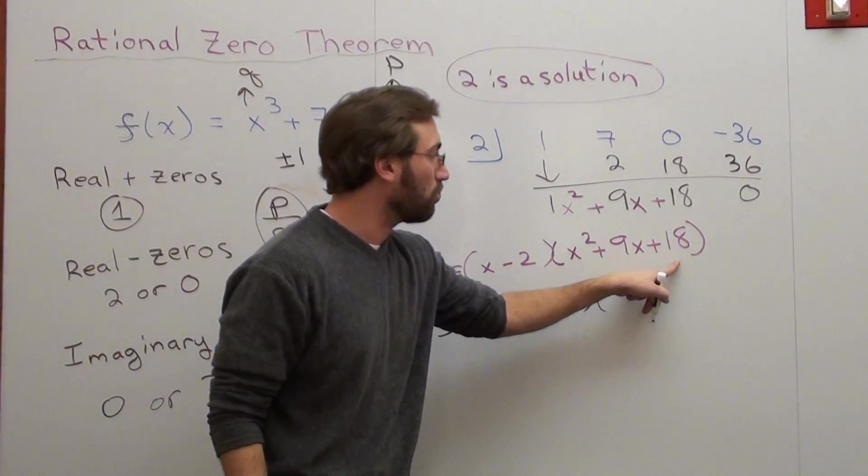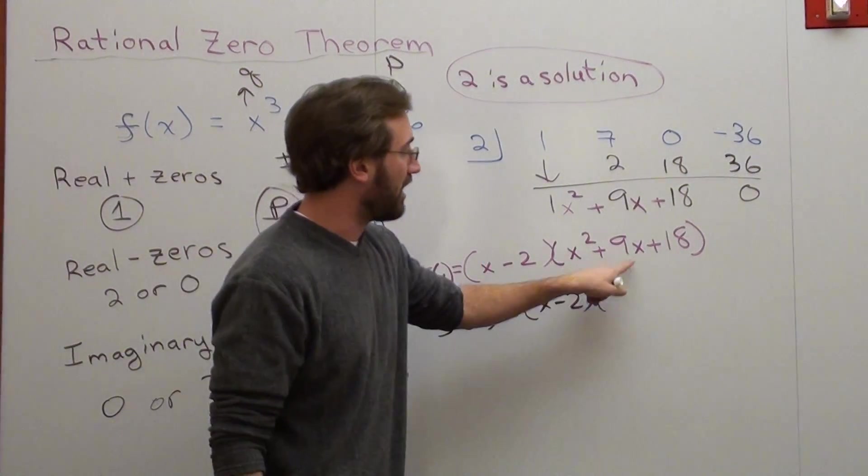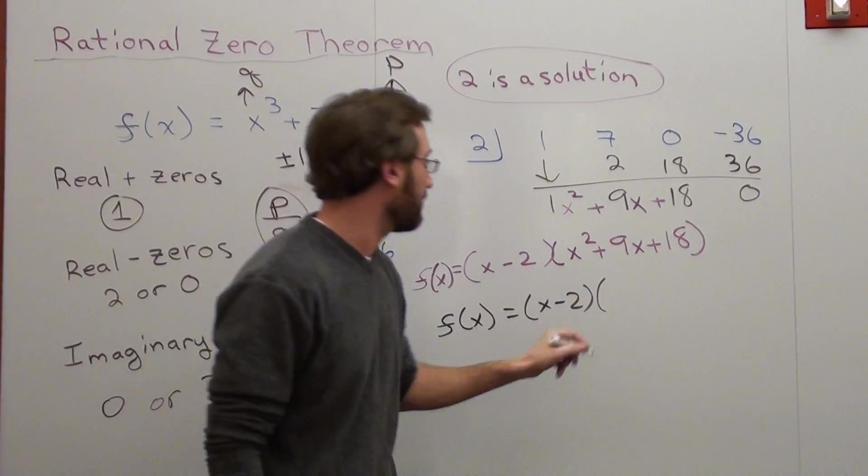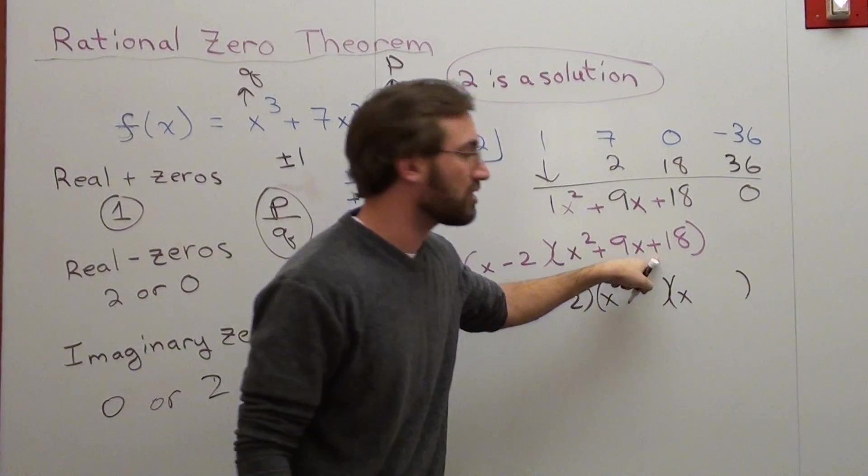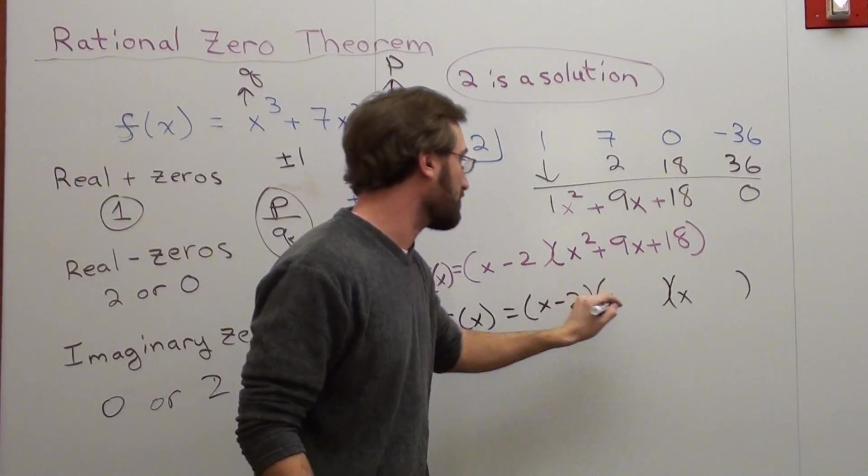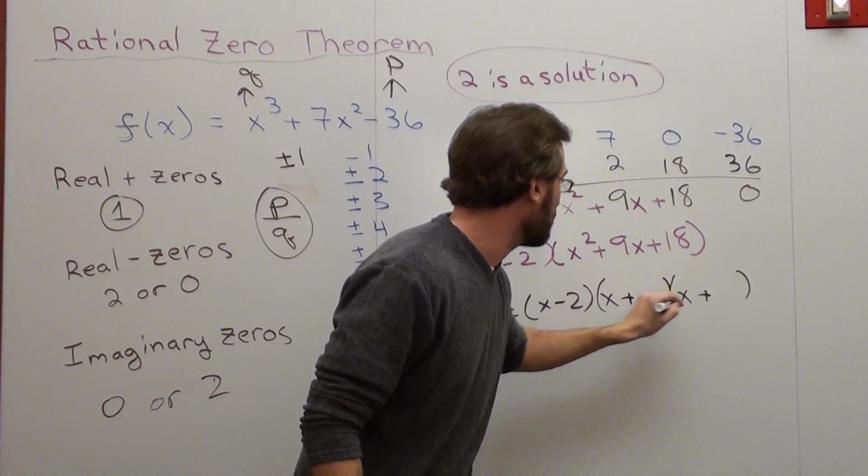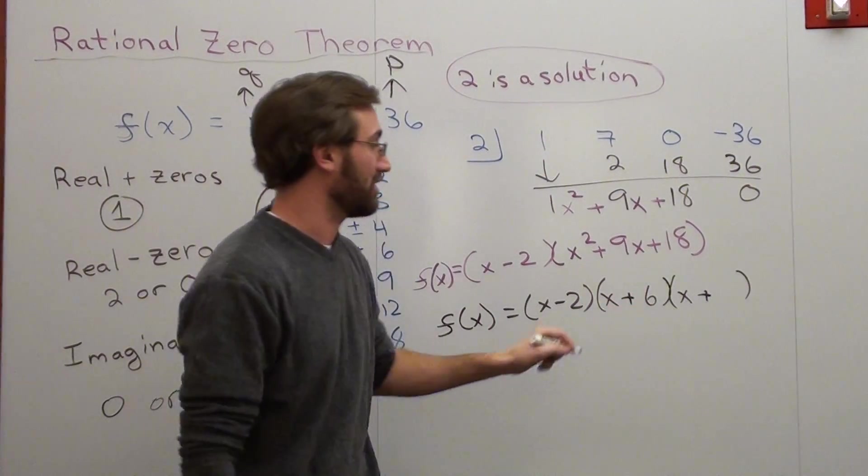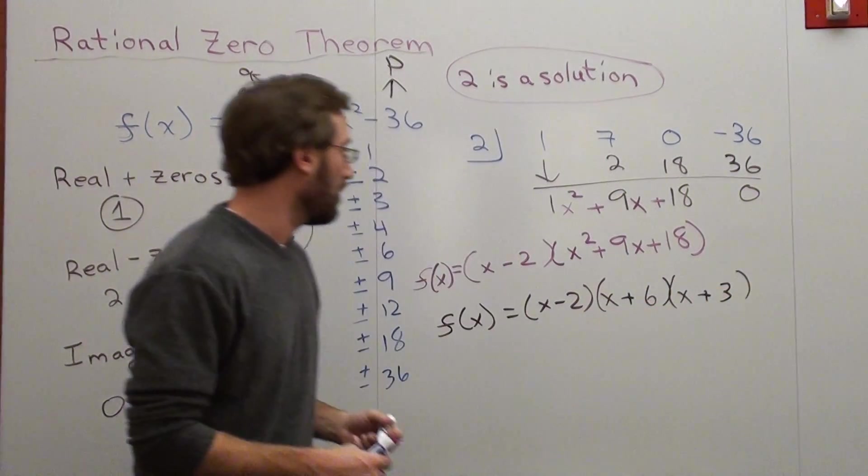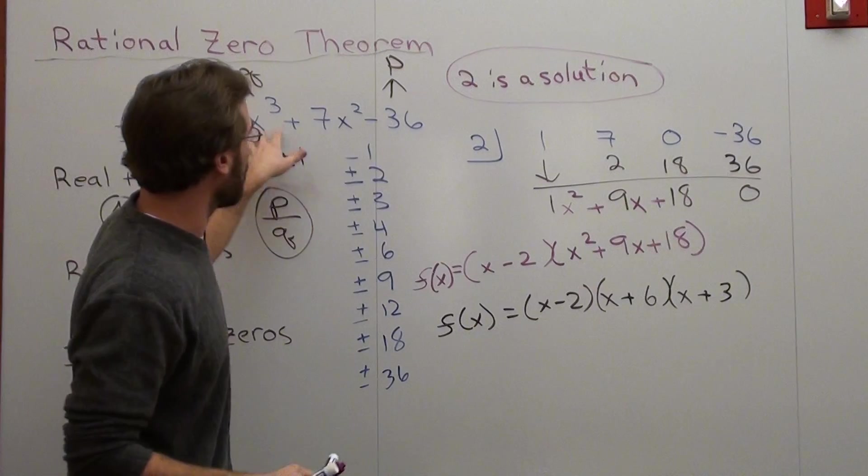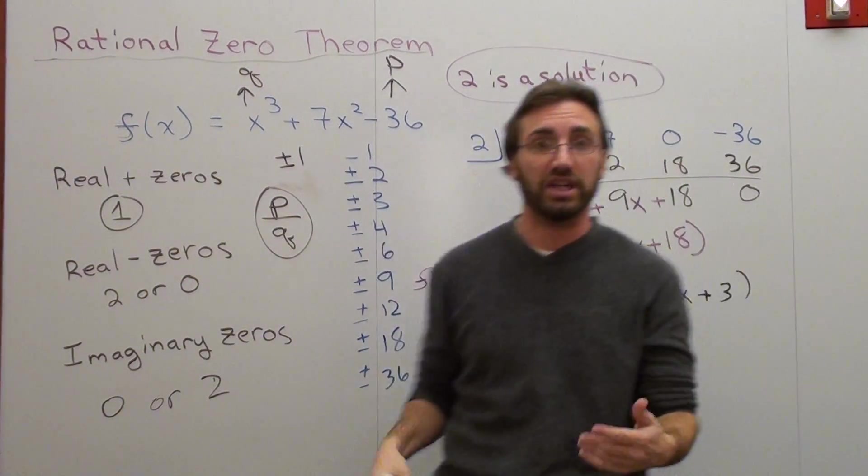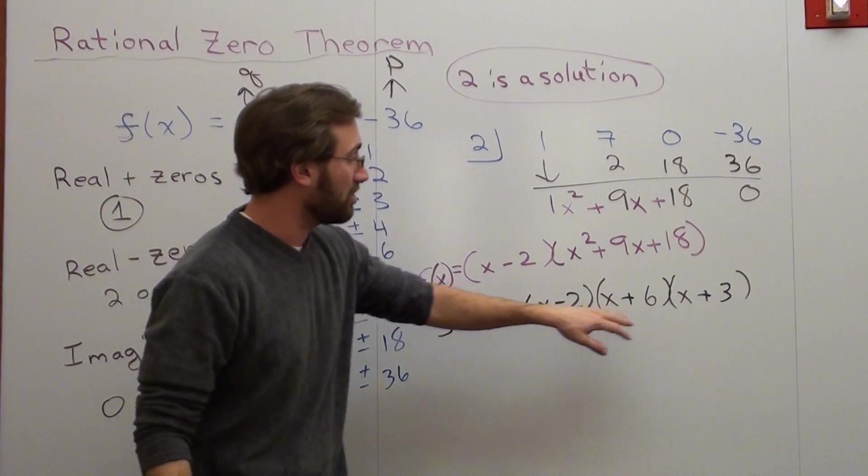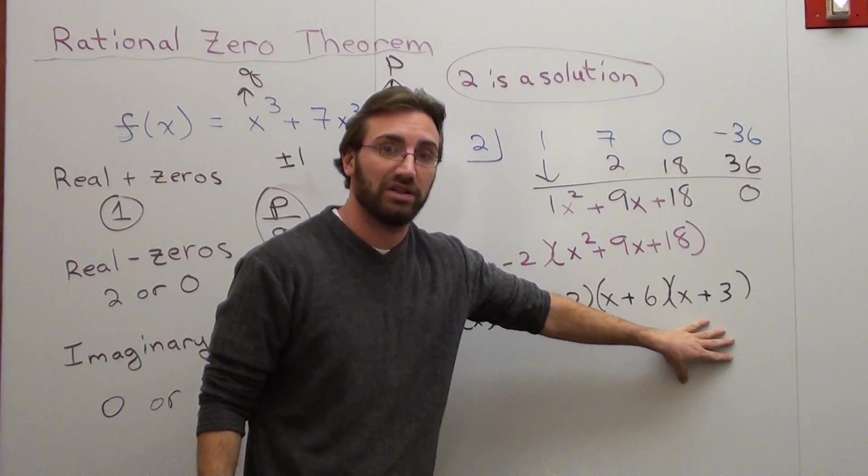So this is actually this, and you can check. You can go ahead and FOIL it in if you want to. And this turns out to be f of x equals x minus 2 times, we can actually factor x squared plus 9x plus 18. What times what will be 18 but we'll add up to be 9? 6 and 3. And since this term is positive and the middle term is positive, it means that they're both positive. Probably should have said that at first, actually. So I successfully rewrote this function right here. x cubed plus 7x squared minus 36 as the quantity of x minus 2 times the quantity of x plus 6 times the quantity of x plus 3. You just figured out all your zeros.